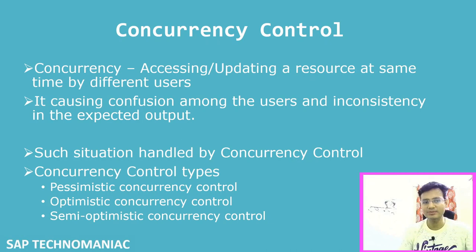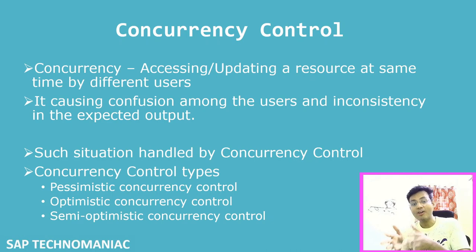To avoid this confusion we use concurrency control. Concurrency control helps us manage this kind of scenario. There are different types: pessimistic concurrency control, optimistic concurrency control, and semi-optimistic concurrency control. We'll see what each one is.